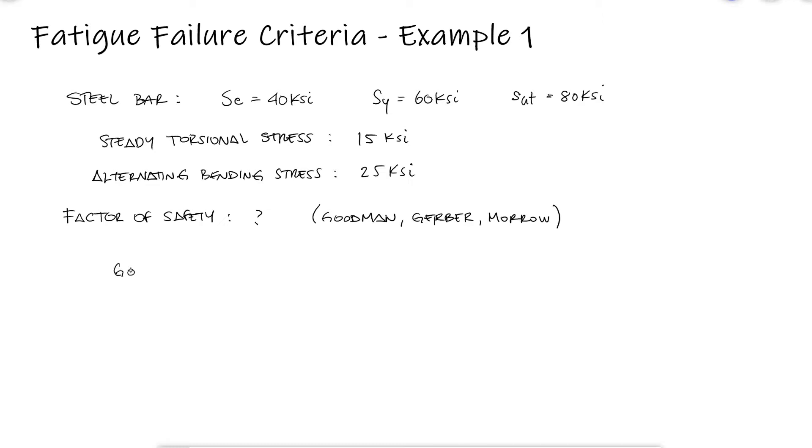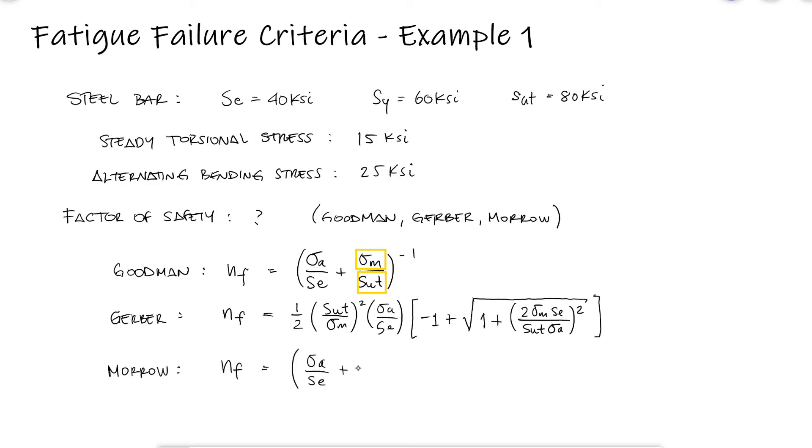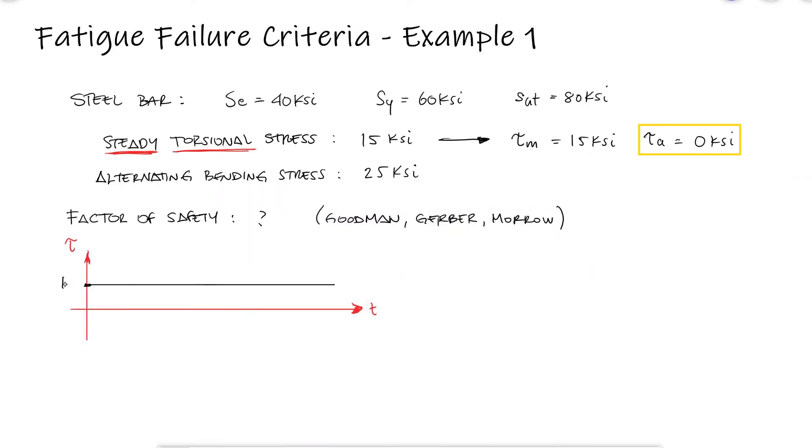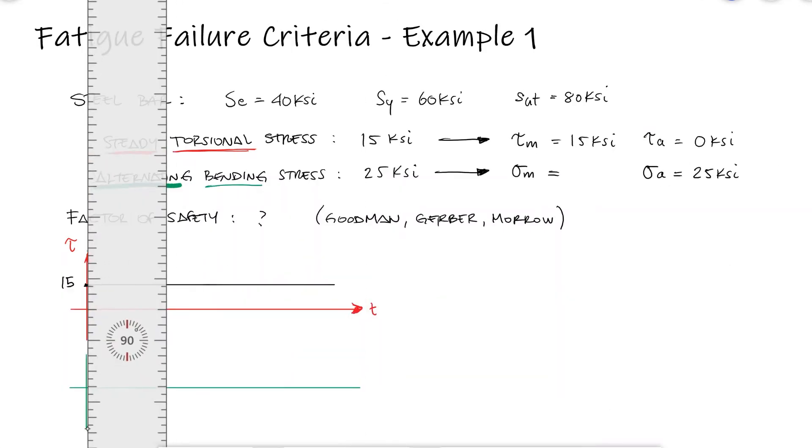From the fluctuating stress diagrams, we know that the alternating stresses are paired with the endurance limit, and the mean stresses are paired with the static properties such as the yield strength, ultimate strength, or true fracture strength. A steady torsional stress indicates that the torsional stress is always that value, meaning that the mean stress is 15 ksi and the torsional alternating stress is zero. The alternating bending stress indicates that the normal stress goes from minus 25 to positive 25 ksi.